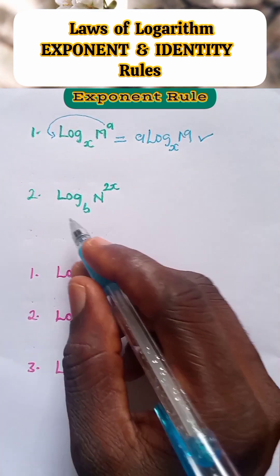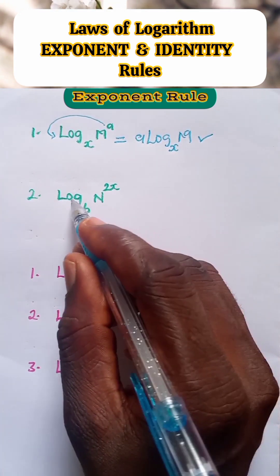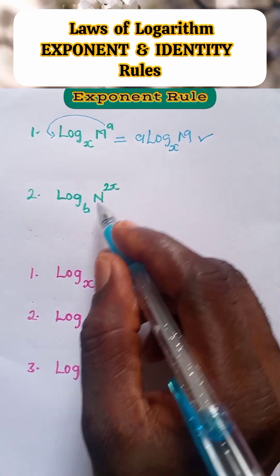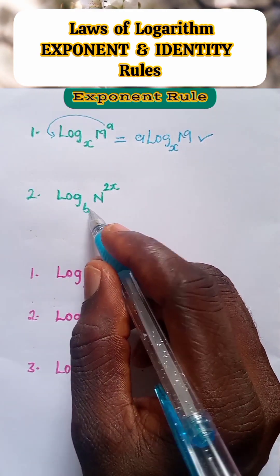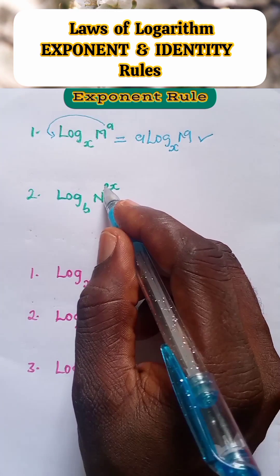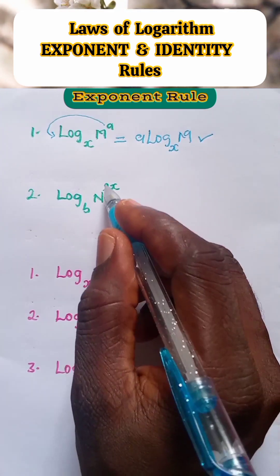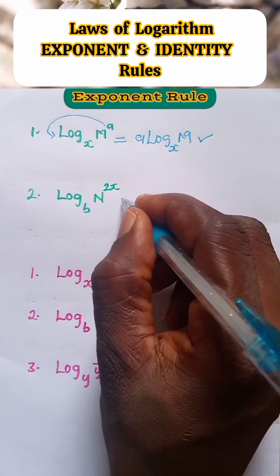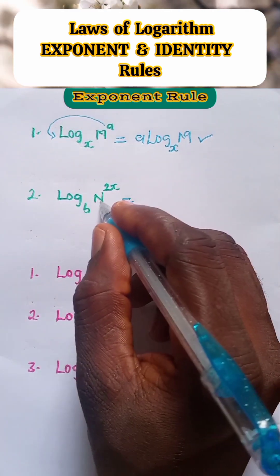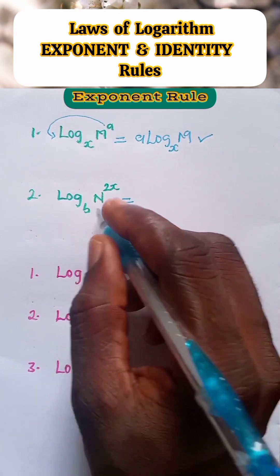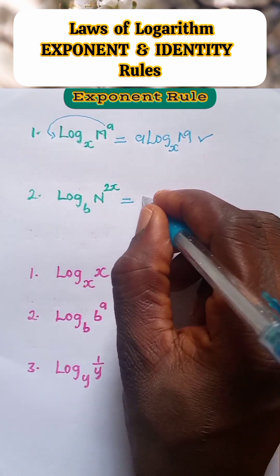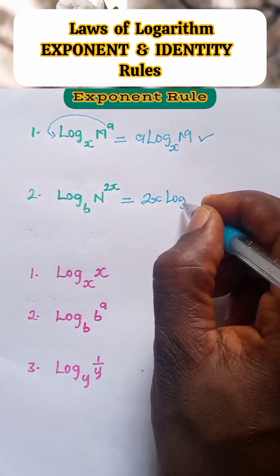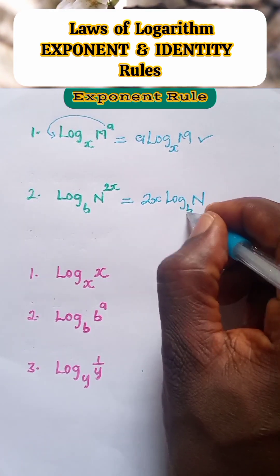Let's look at question 2: log of n raised to power 2x, to base b. According to the law, 2x being an exponent, it comes in front to multiply the entire log. Therefore, log of n raised to power 2x, to base b, is equal to 2x times log of n to base b.